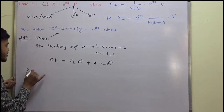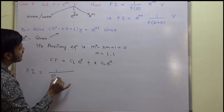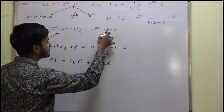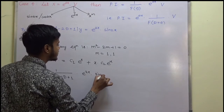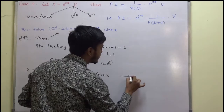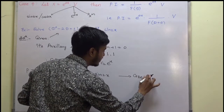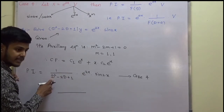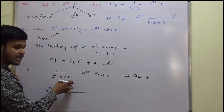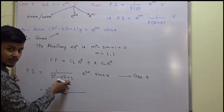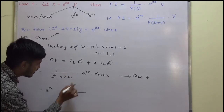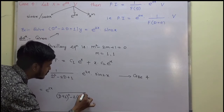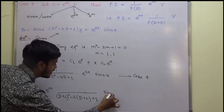Now we are interested in finding PI. PI is equal to 1 upon (D squared minus 2D plus 1) into e to the power 2x times sin 2x. This is a problem of case 4. What case 4 says: you can take out e to the power 2x outside. The denominator D squared minus 2D plus 1 is nothing but (D minus 1) whole squared. Taking out e to the power 2x outside, we replace D by D plus 2, giving 1 upon (D plus 2) whole squared minus 2(D plus 2) plus 1, all operating on sin 2x.